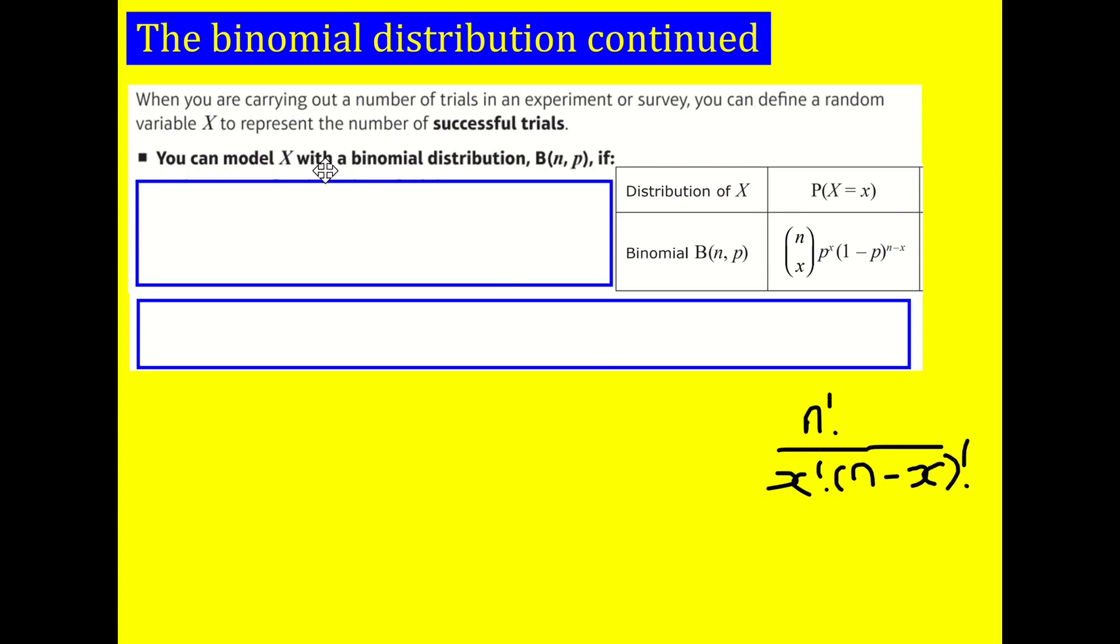We need to think about whether the binomial distribution is a suitable model. Can we actually use it in different situations? Here are the conditions. Number one, there needs to be a fixed number of trials. This is imperative in the binomial distribution. You've got this parameter n which says the number of trials. If you were shooting 10 hoops in basketball and you're interested in whether you get it in the basket or not, you can model it with a binomial distribution. However, if you say I'm just going to keep throwing it until I get a basket, that is not a fixed number of trials. That's more of a geometric distribution.